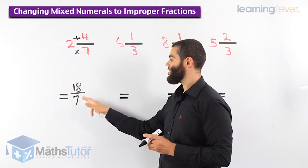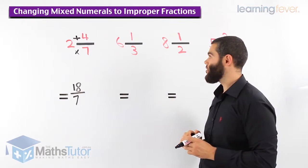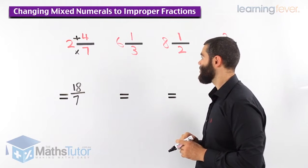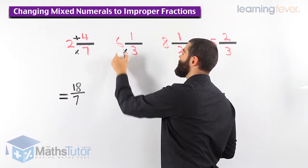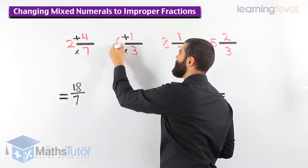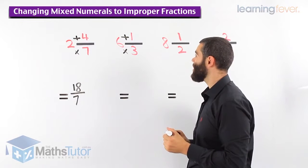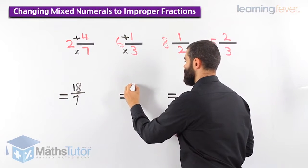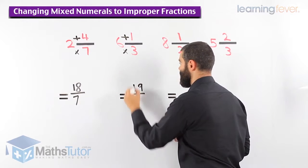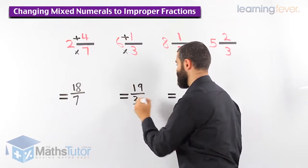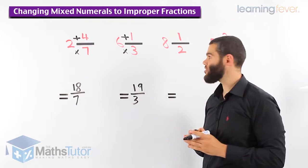Here, we start with the denominator again. 3 times 6, then plus 1. 3 times 6 is 18. 18 plus 1 is 19 over 3, because our denominator stays the same. That's our improper fraction.